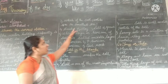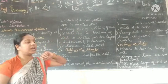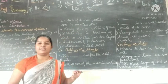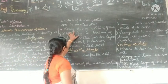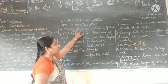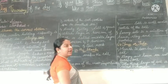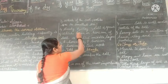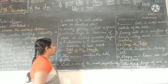Next question: which soil particles are smallest in size? The options are clayey, silt, and gravels. The answer is clay soil.